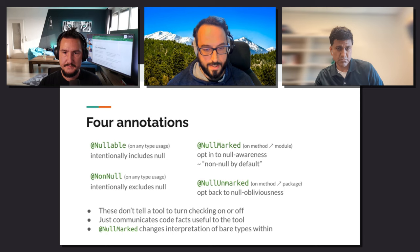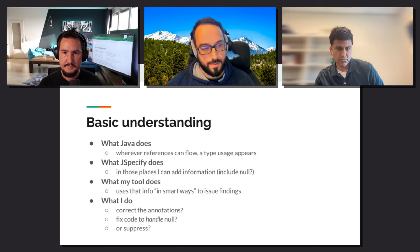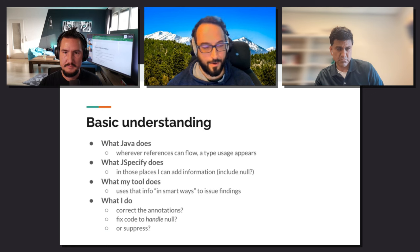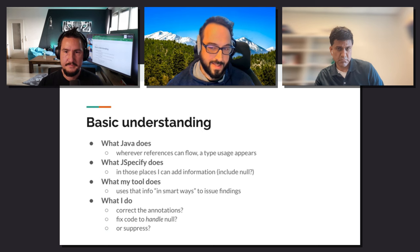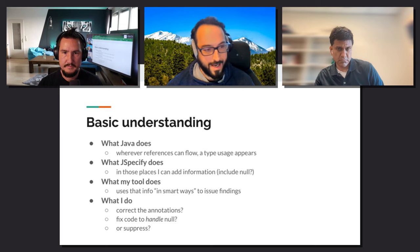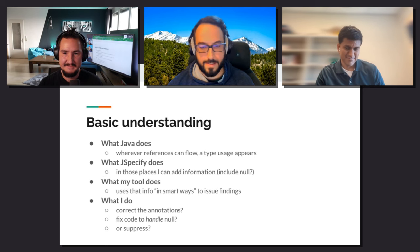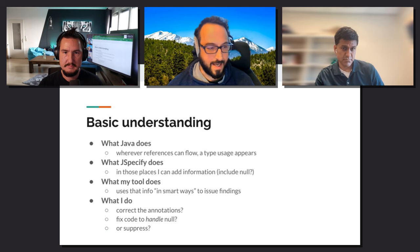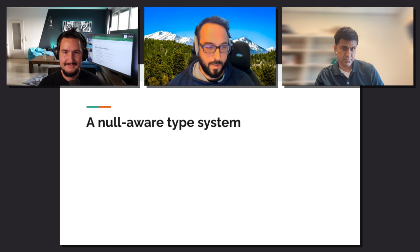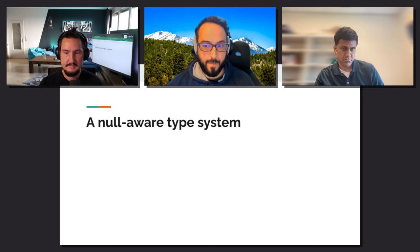Tools can still do some checking outside of NullMarked code, but they just don't have very much information to act on, so they can't catch that many problems. We hope that most users most of the time will be able to handle most situations with a shallow understanding of what's really going on. Basically, you can express where you want null to be, let your tool do its thing, and when it complains, you have a decision to make. Should I ask Stack Overflow or should I ask ChatGPT? Then you adjust the annotations, fix the code, or suppress the warning.